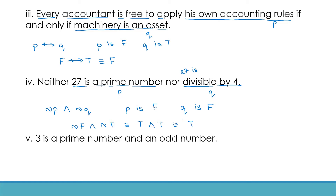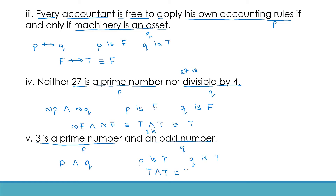Next: 3 is a prime number and an odd number. Take '3 is a prime number' as statement P, and '3 is an odd number' as statement Q. Symbolically this is P and Q. P is true because 3 is a prime number, and Q is also true because 3 is an odd number. So true and true is equivalent to true — this statement is overall true.